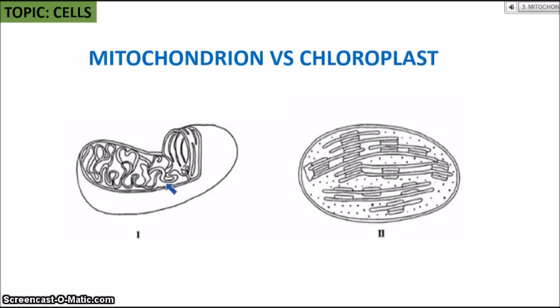You should be able to identify the difference between the mitochondrion and the chloroplast — it's important for labeling so you don't get them mixed up. The mitochondrion is easily recognized by the inner folds in its structure. The chloroplast, on the other hand, has special membranes stacked up — that would help you identify the chloroplast. So that is the key difference between the mitochondrion and the chloroplast.